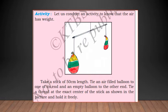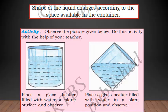Take a stick of 50 centimeter length. When you tie it as a balance you should tie it in the middle of the stick. Tie an air-filled balloon to one of its end and an empty balloon to the other end. Tie a thread to the exact center of the stick as shown in the picture and hold it freely. What do we observe in such situation is that the balloon which has air in it is heavier than the balloon which does not have air in it. That is the experiment which shows that the air has weight.